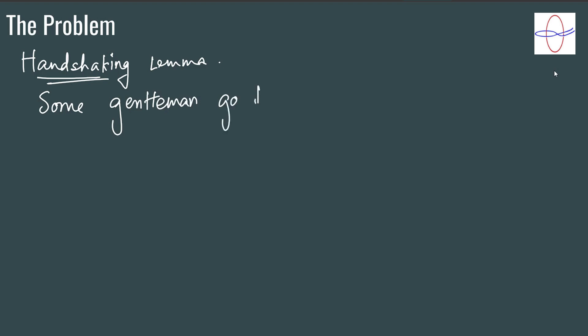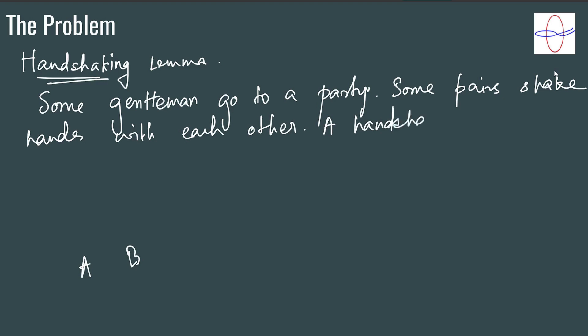Some pairs of these gentlemen shake hands with each other. Not all necessarily, some shake hands with each other. A handshake is considered mutual. So if A shakes B's hand, then B will consider the handshaking by A and A will consider the handshaking by B.